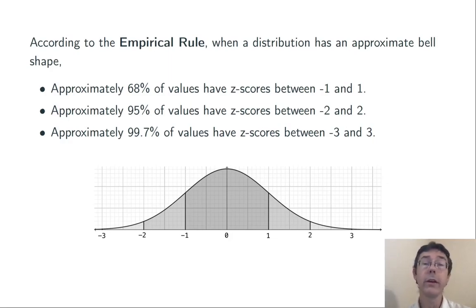The empirical rule here, in particular, I think validates the convention that we saw in the previous slide of saying that a value will be considered unusual if it's more than two standard deviations from the mean, and very unusual if it's more than three standard deviations from the mean.